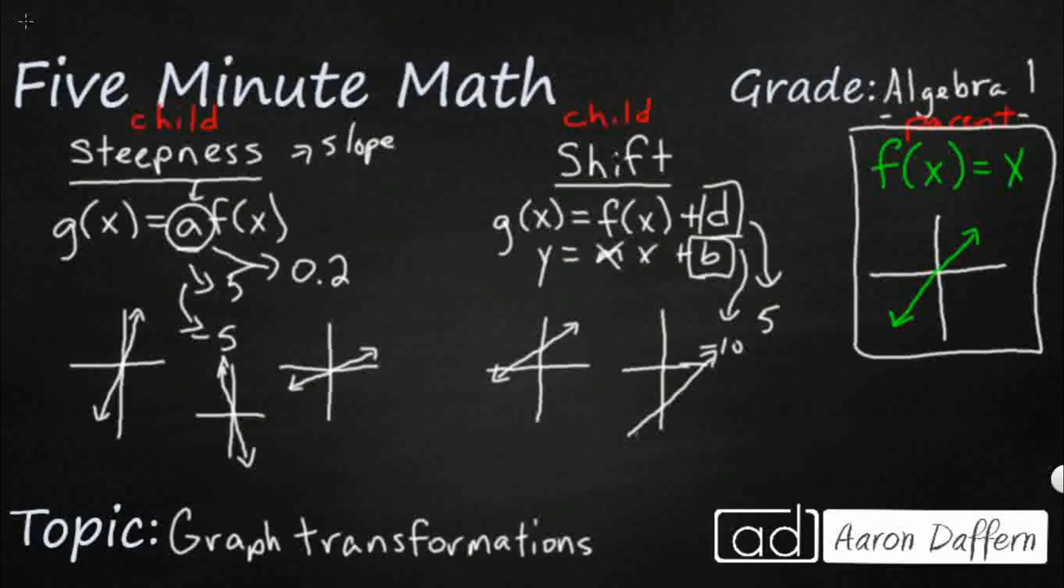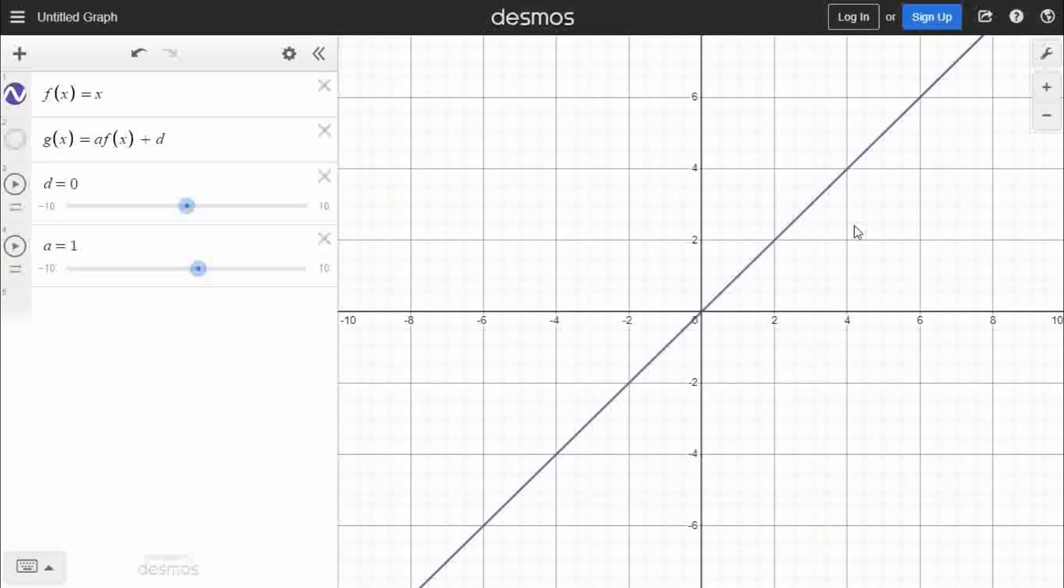So let's see what that looks like on an actual graph. So I've got the basic function here, f of x equals x. I'm going to put another function on top of it. This g of x equals a f of x plus d. It's going to be green, but you notice I've got these sliders right here. So right now my d is 0, so it's sitting right on top of the purple one. And then my a is 1, which means I'm not changing it at all.